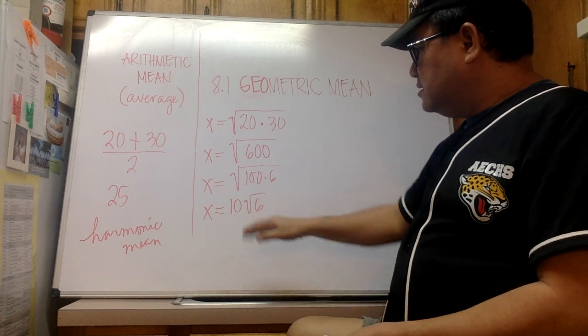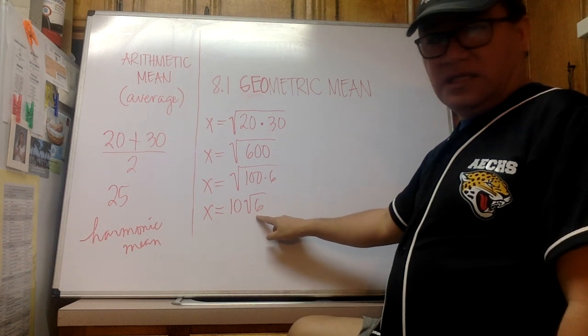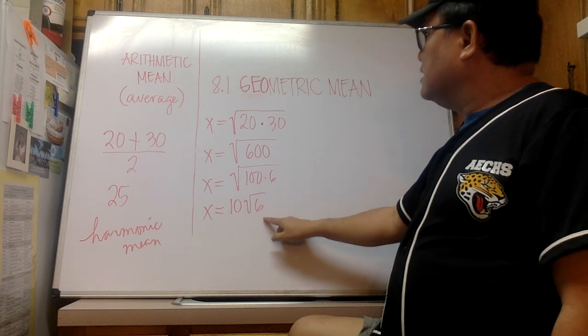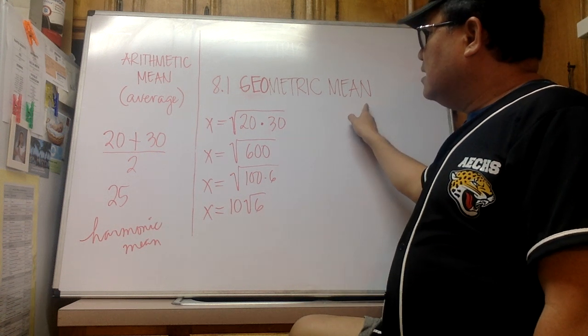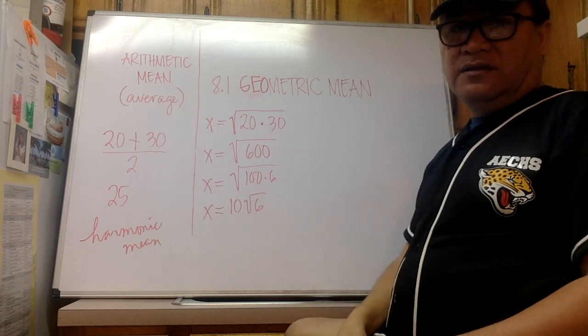Now what does this answer mean? Again, 10 square root of 6 is the geometric mean of the two numbers 20 and 30.